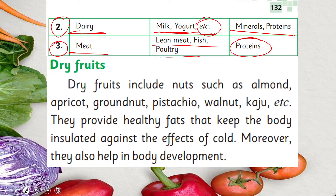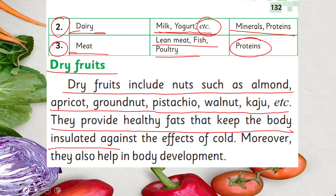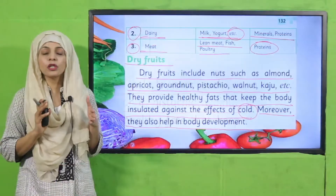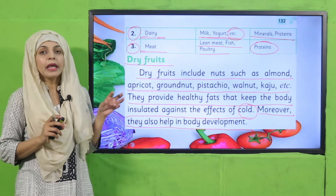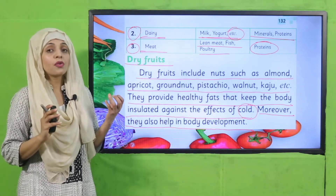Let's read about dry fruits. 'Dry fruits include nuts such as almonds, apricot, brown nut, pistachio, walnut, cashew, etc. They provide healthy fats that keep the body insulated against the effects of cold. Moreover, they also help in body development.' Dry fruits provide us with fats and minerals, and examples include almonds, pistachios, walnuts, cashews, and dry apricots.